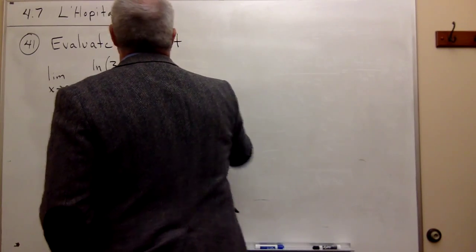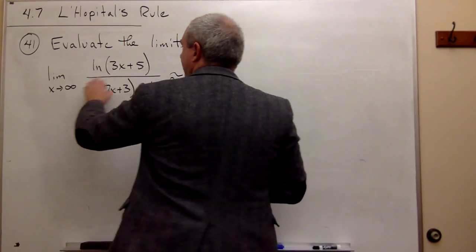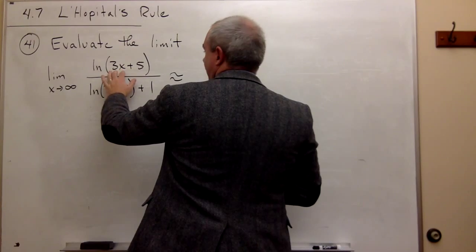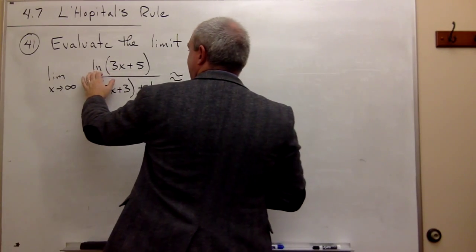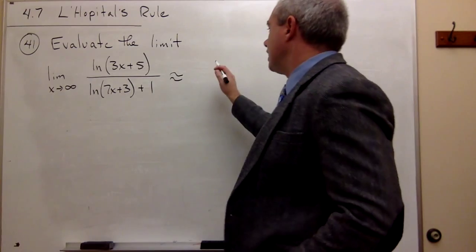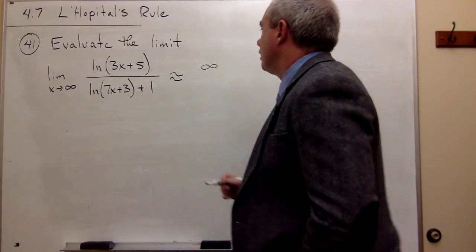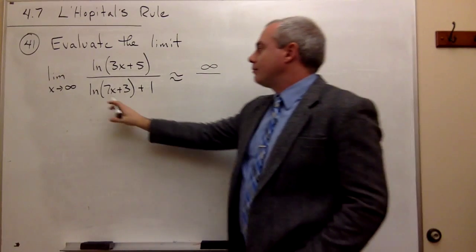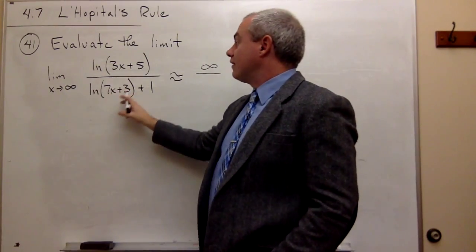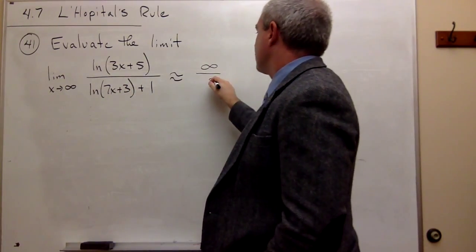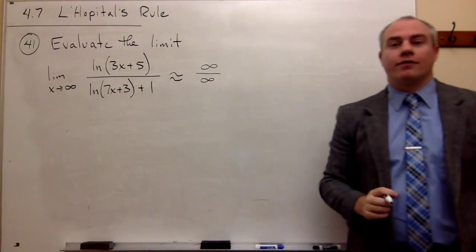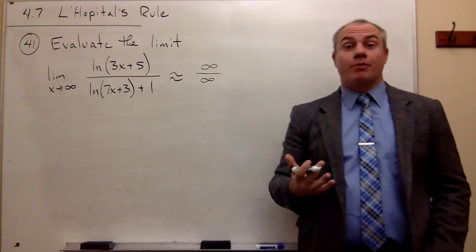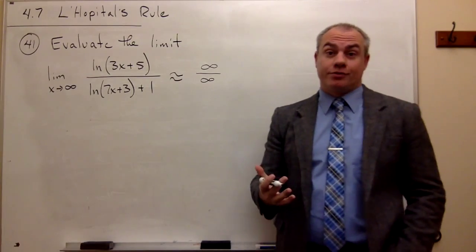So let's see what we've got here. If I plug in infinity, I get 3 times infinity, which is infinity, plus 5 is infinity, and ln of infinity is infinite. So on top, we get something infinite. On bottom, I get ln of, again, infinity plus 1. That's also infinite. So we do have a form infinity over infinity, which is an appropriate form to use L'Hopital's rule on.